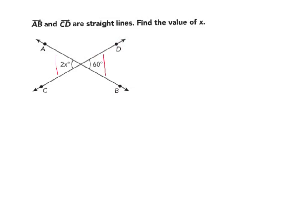Vertical angles are also called congruent angles, which means that they have the same measure.